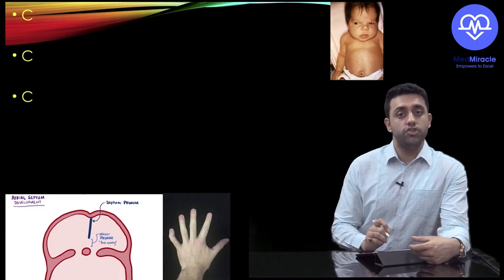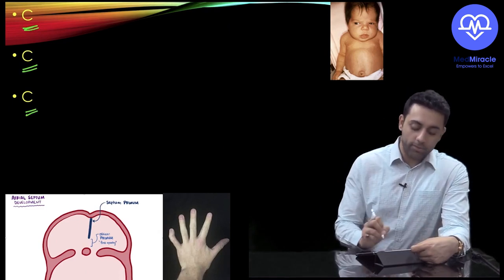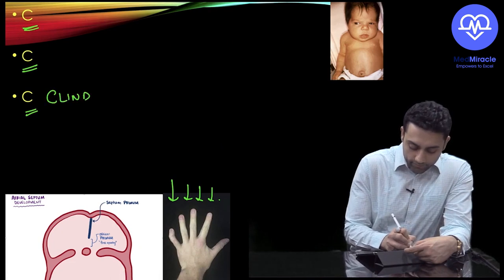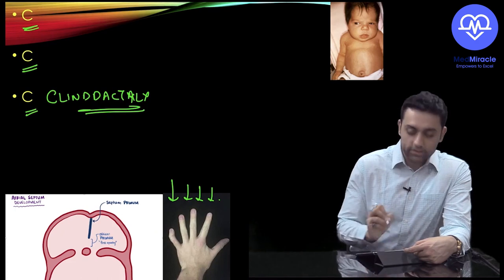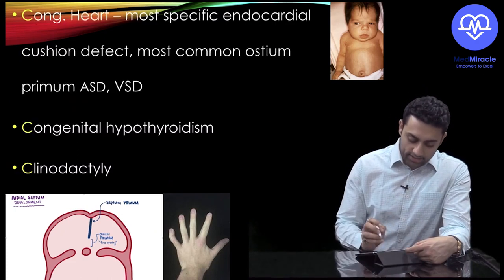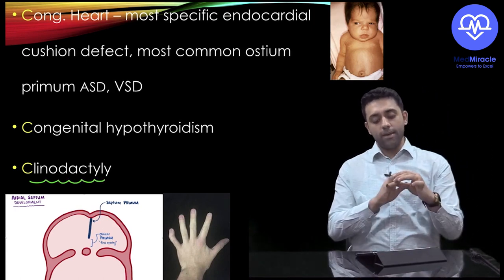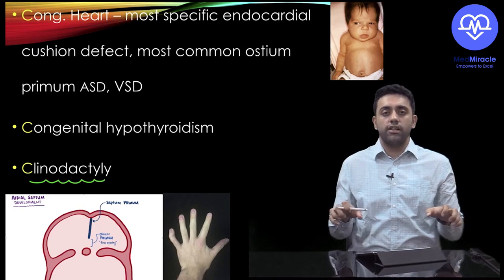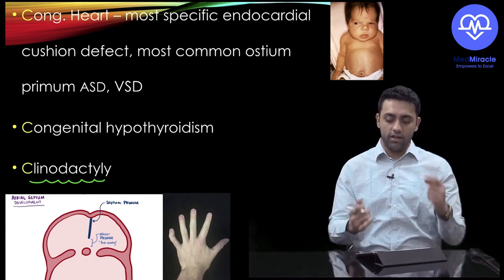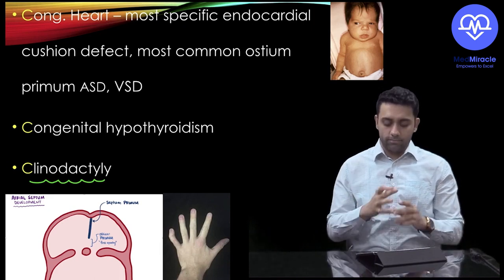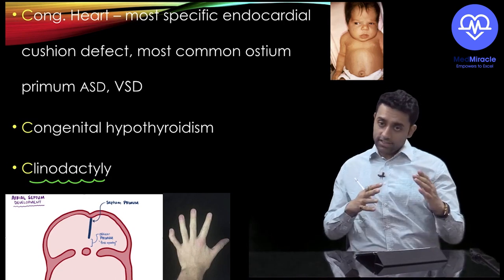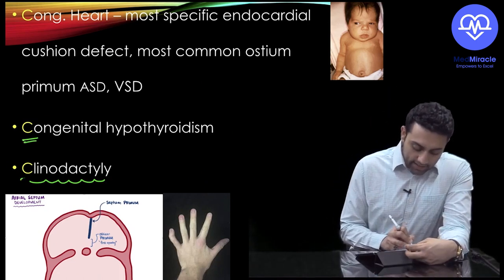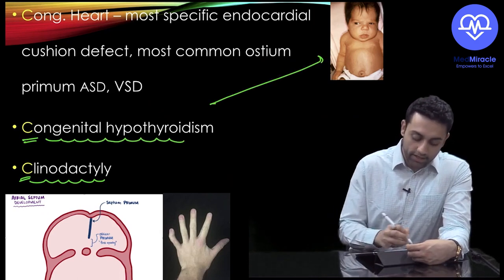For the Check-Up section (C's): number one is clinodactyly — incurvature of the fifth digit. To differentiate: brachydactyly means short stubby fingers seen in short-limb dwarfism like achondroplasia; arachnodactyly means long slender hands; and clinodactyly means incurvature of the fifth finger. The three C's in Down syndrome are clinodactyly, congenital hypothyroidism, and congenital heart disease.